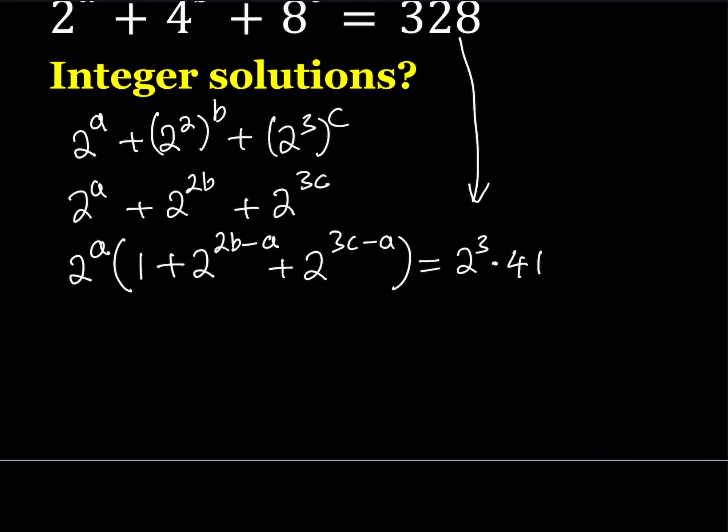328 can be written as 8 times 41, which equals 2 to the power 3 times 41. Now, one of the nicest things about 41 is that it's a prime number, so there's no way it can equal a power of 2. And 2 to the power a must equal 2 to the power 3. So from here, we get that a equals 3.